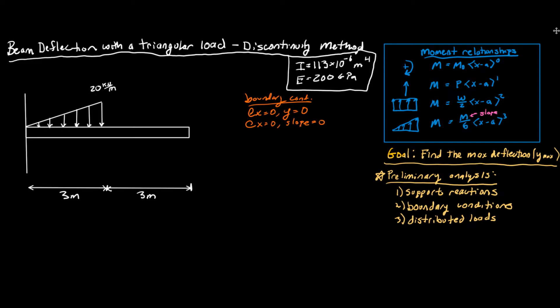So we can say that this beam, when we apply the load to it, is going to deflect. It's not going to move at the wall, and there's going to be zero slope there, but then it's going to start to deflect. Our goal is to find this y value - how much that beam deflects.